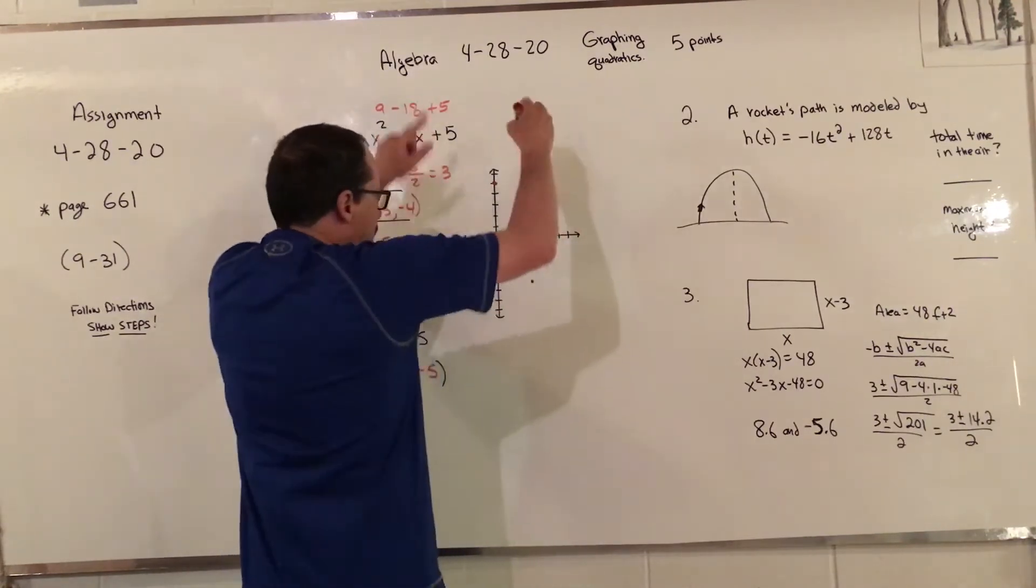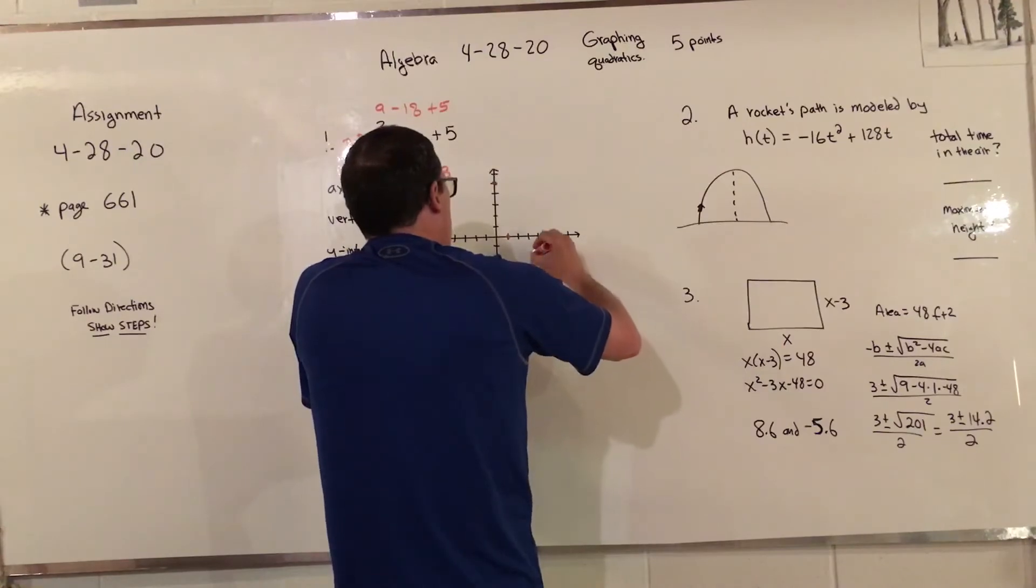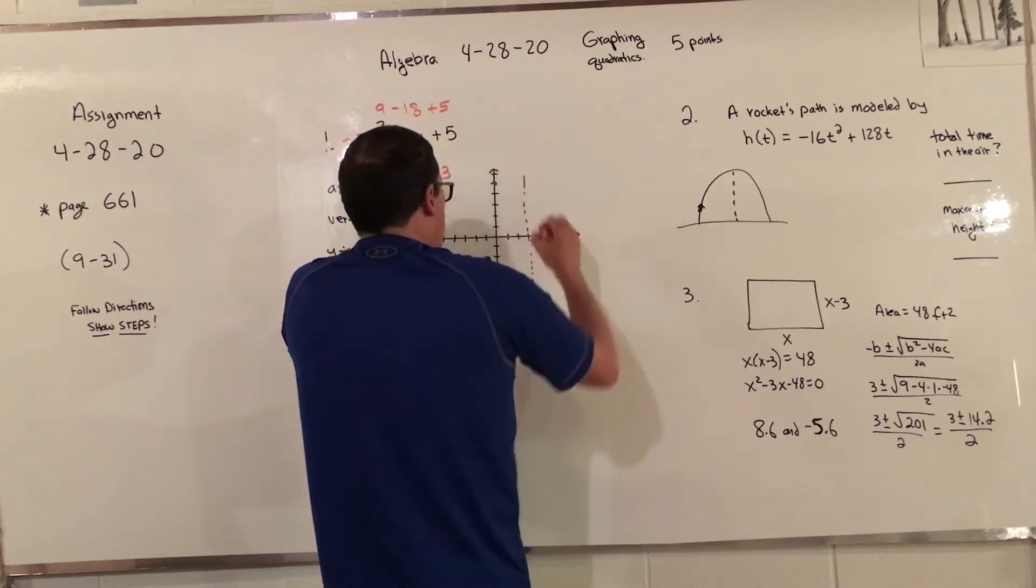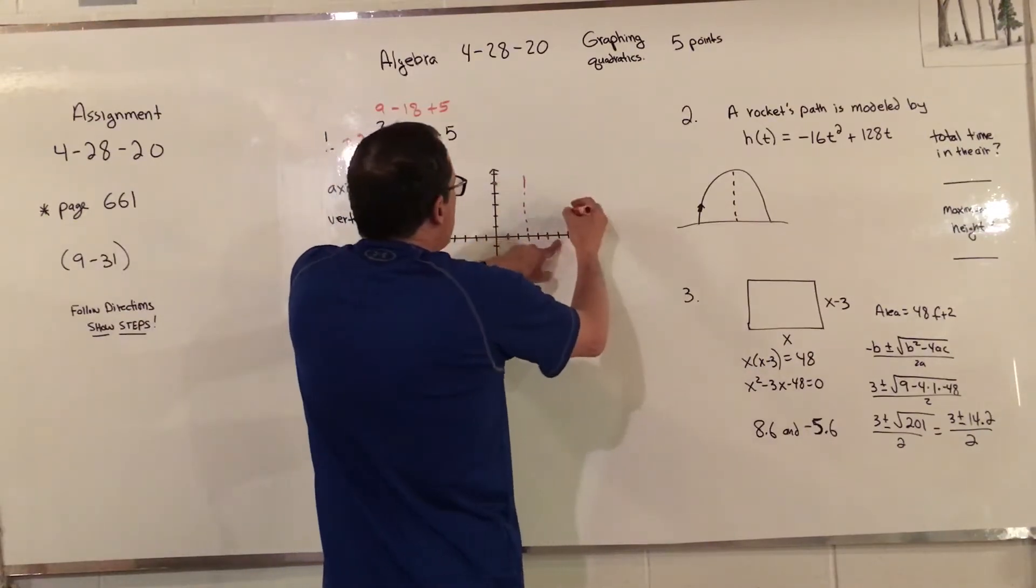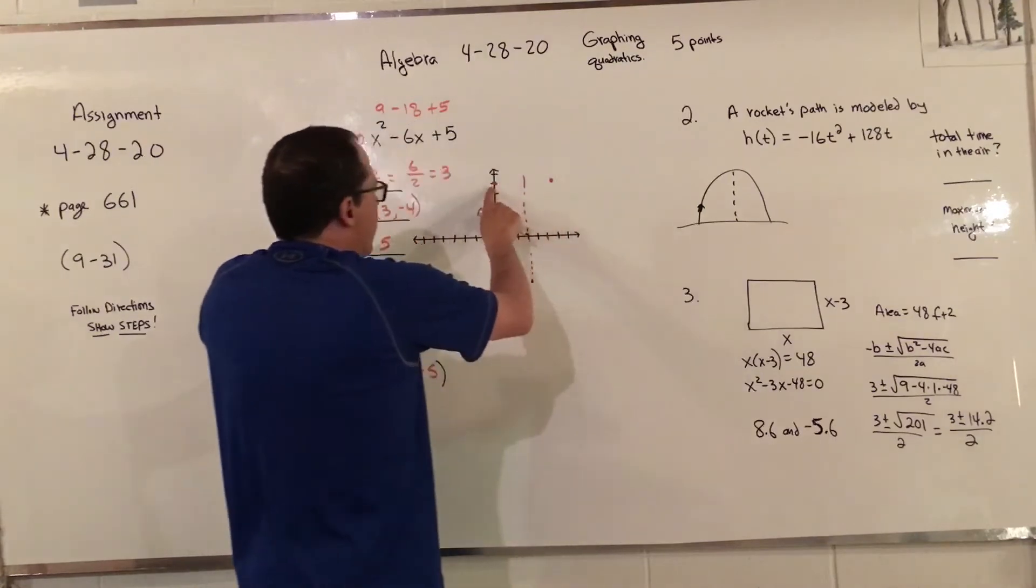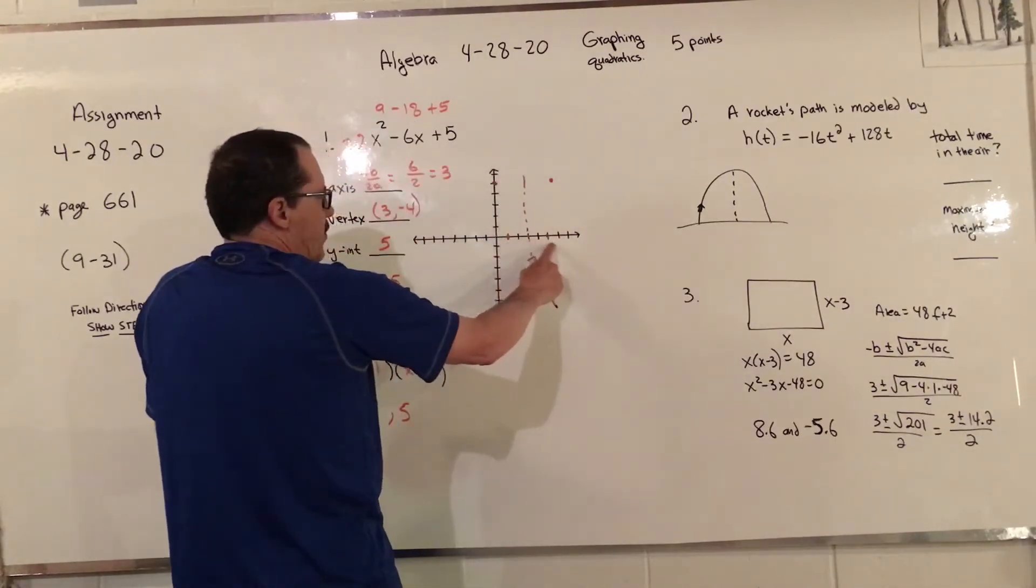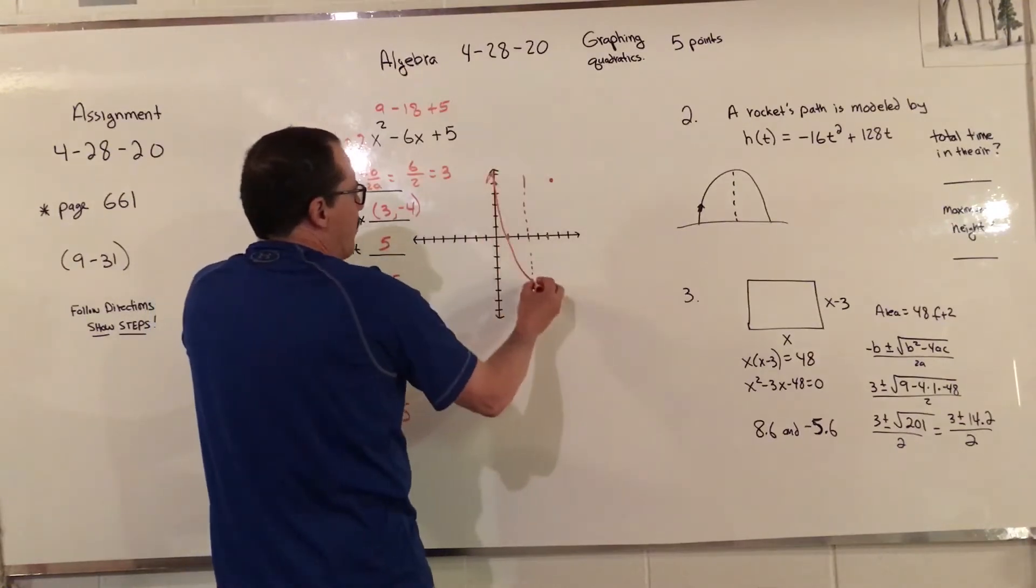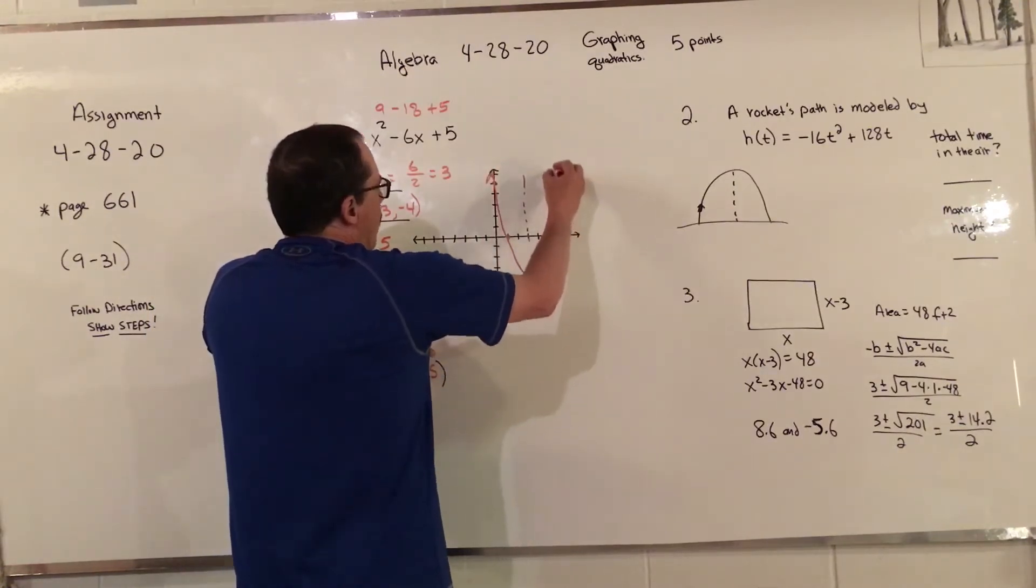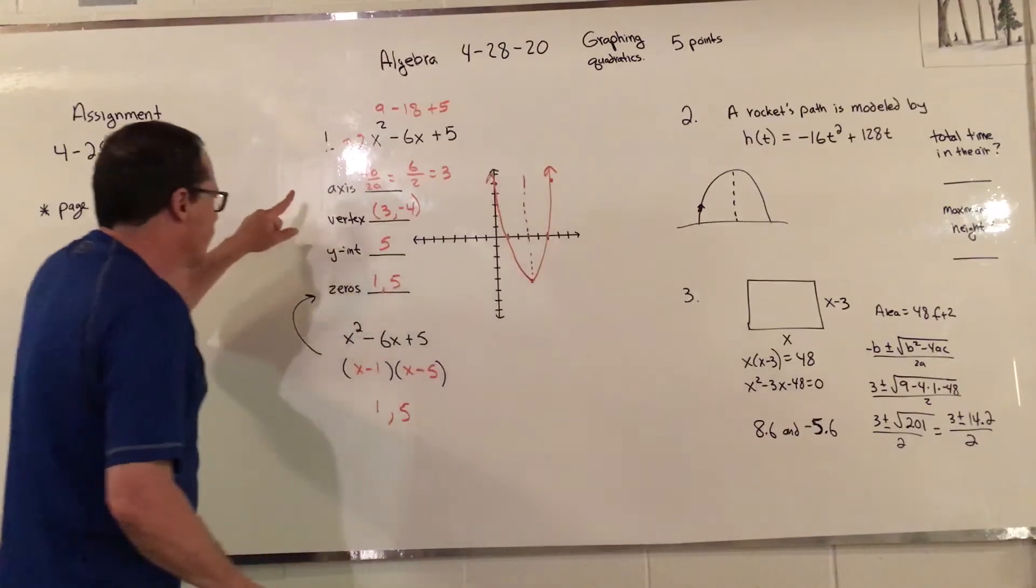My dotted line, because I know it opens up, is going to be about right there. It's not perfect. This is 1, 2, 3 spaces from here, so 1, 2, 3 spaces from here. I just reflected that across there. There's my two zeros, here's my vertex.